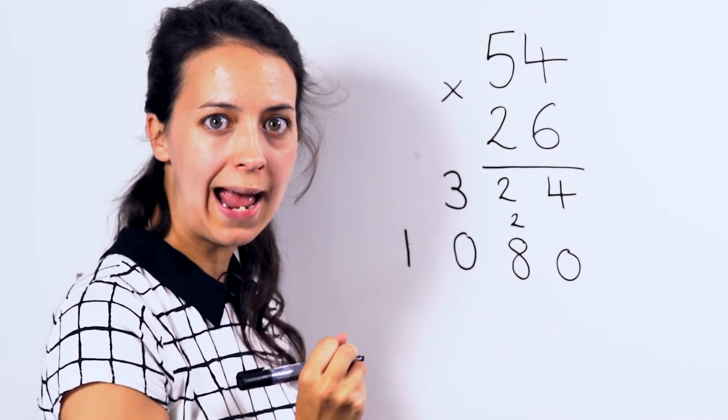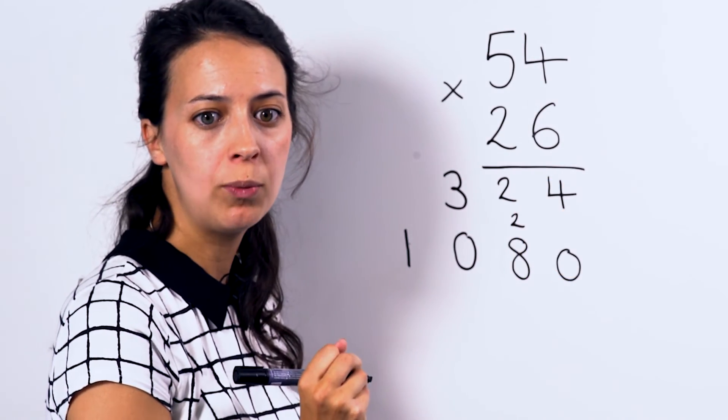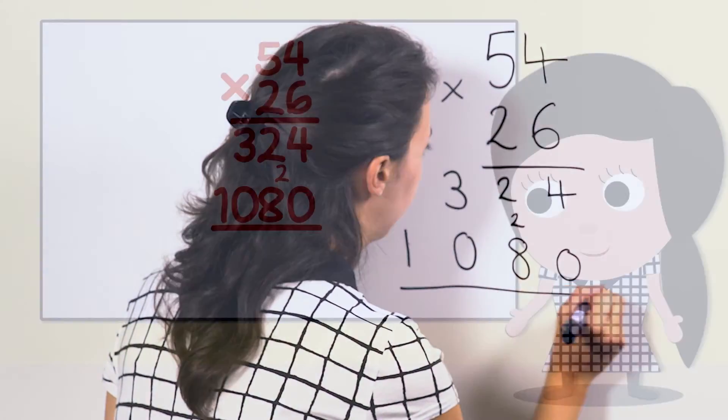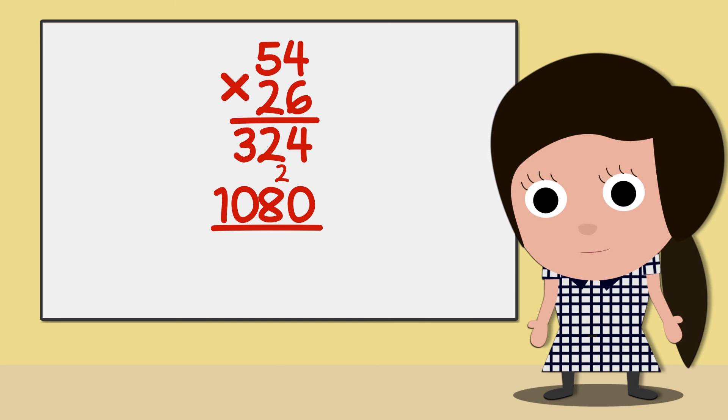We will now add our two partial answers using the formal column method of addition. Begin by adding the ones. 4 add 0 is 4.